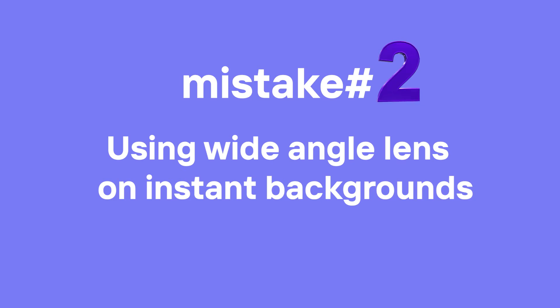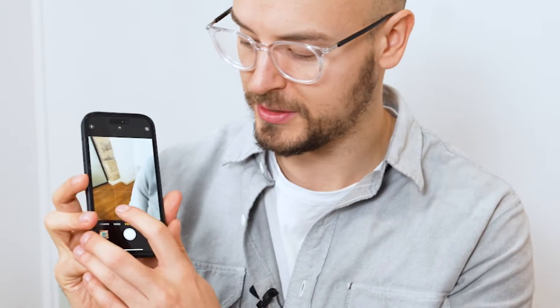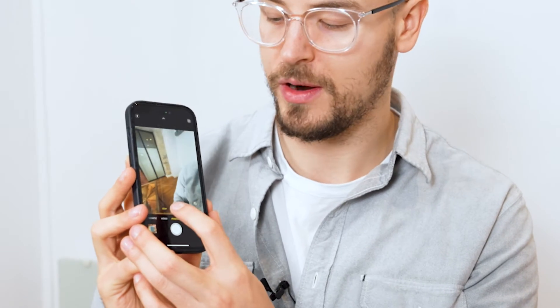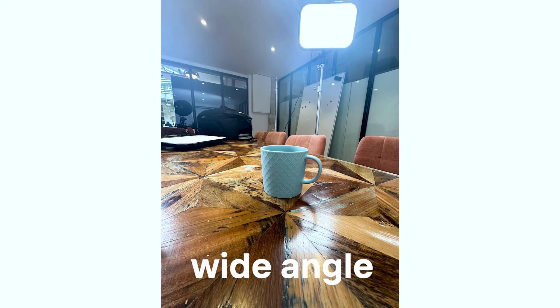So mistake number one: don't click on the background tab; click on the instant background tab. Now mistake number two is a bit less obvious — it's about taking pictures so they look good in instant backgrounds. When you go on your phone, you'll have options like wide angle and 1x, 2x, 3x depending on whether you have a telephoto camera. I always recommend using telephoto if you can, because the pictures look a lot better.